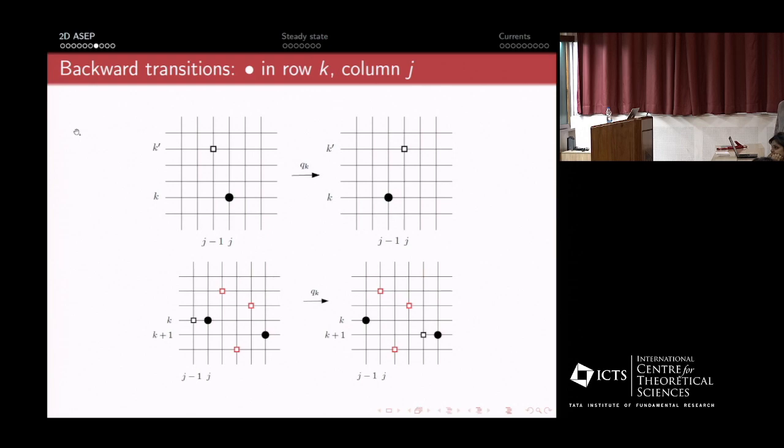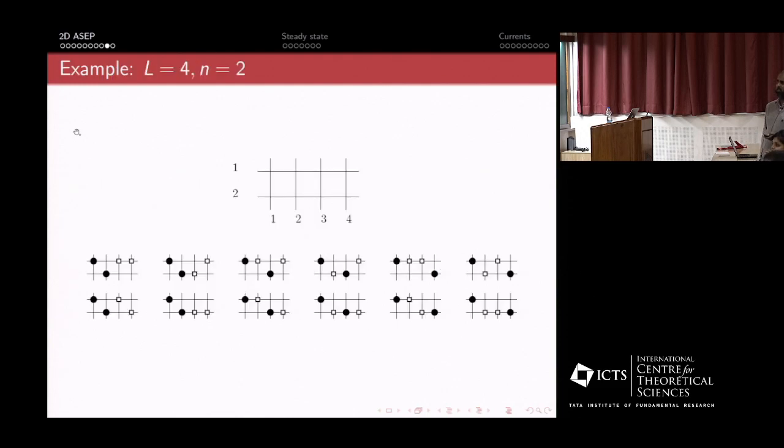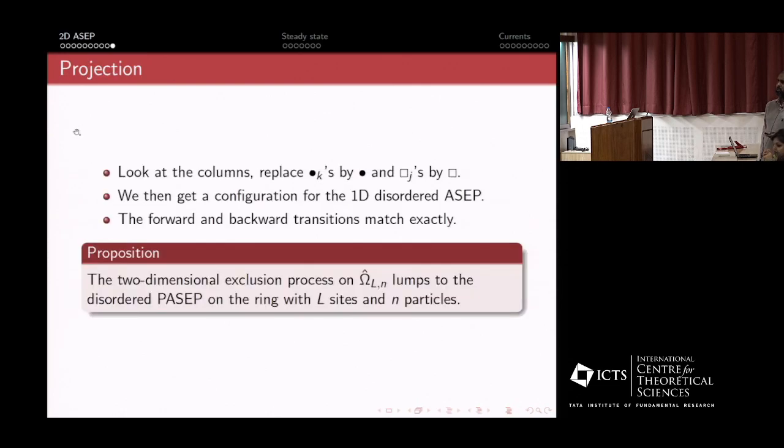Exactly the same kind of transitions happen in the backward direction with rate qk. This process is invariant under horizontal translations, so one can focus on configurations where one location is occupied by the first class particle. These are restricted configurations and then the column indices must be strictly increasing. For example, if you have L equals four, n equals two, these are the kinds of configurations. The one-one position is always first. This process lumps to the disordered ASEP studied by Martin Evans in a probabilistic way.